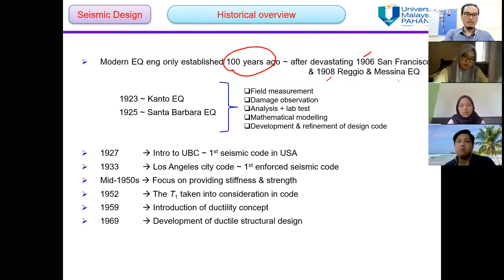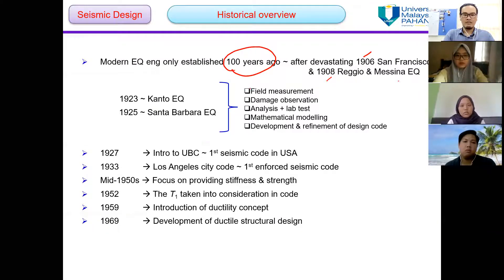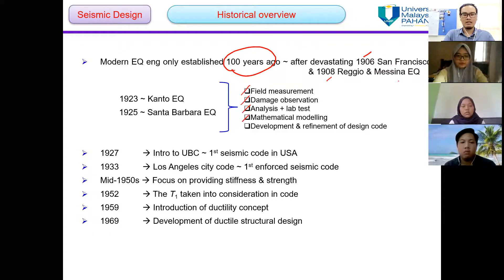After the 1923 and 1925 Kanto and Santa Barbara earthquakes respectively, experts began serious field measurement, damage observation, analysis and lab tests, mathematical modeling, and the development and refinement of design codes.